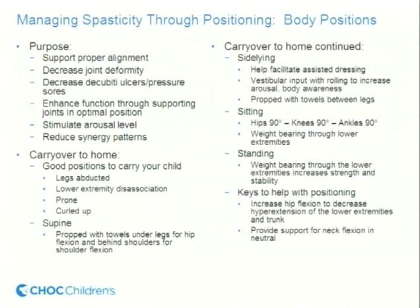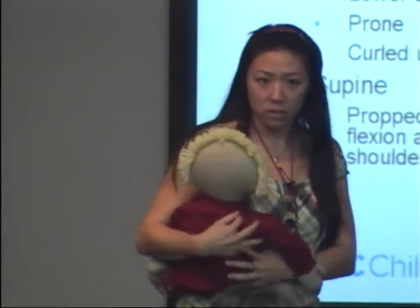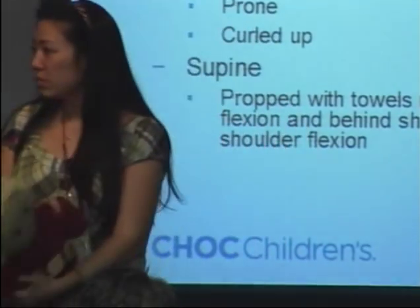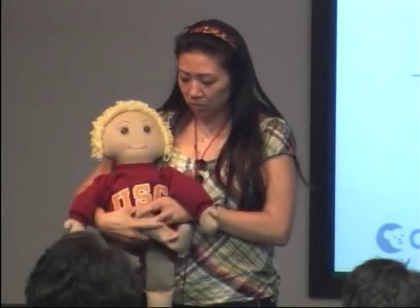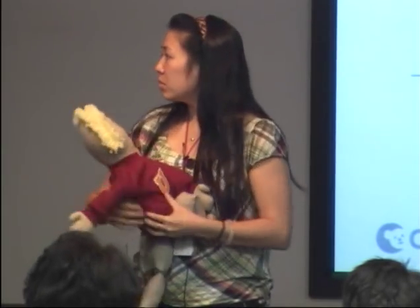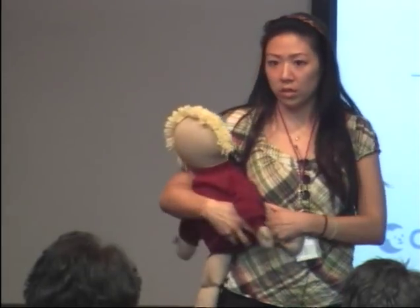For carryover to home — for example, if you have an infant, how do you carry your child? A lot of times children with spasticity have their legs in a scissoring pattern because the muscles are so tight. One example is just holding the child with their legs abducted — this is actually helping the child stretch out those muscles. The other technique is lower extremity dissociation, where you hold the child with flexion on one side of the body and extension on the other, then switch sides.